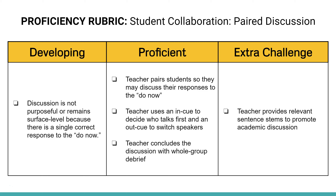To earn credit for this module, you'll use effective directions to pair students together so that they can discuss their responses to the do now. You'll use an end cue to decide who speaks first and an out cue to switch partners.